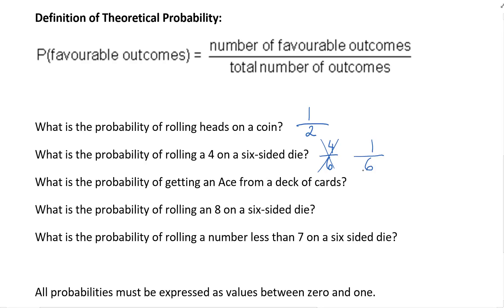What is the probability of getting an ace from a deck of cards? Well I know that there's four aces in the deck of cards so that would be four out of a total of 52 cards in the deck. What is the probability of rolling an eight on a six-sided die? Well there are no eights on a standard six-sided die so the probability would be zero out of six.